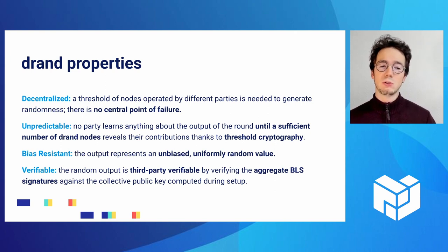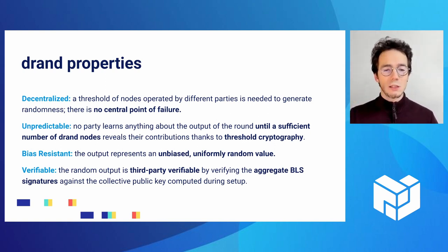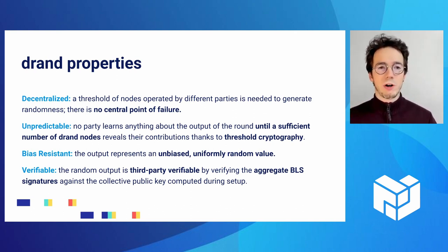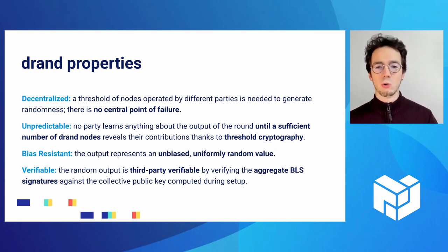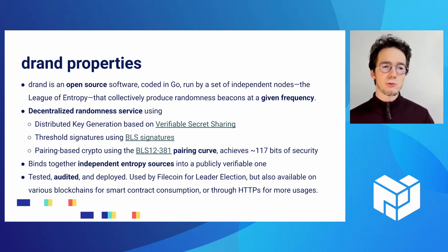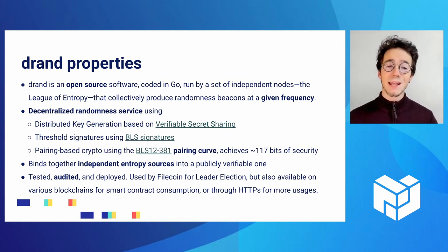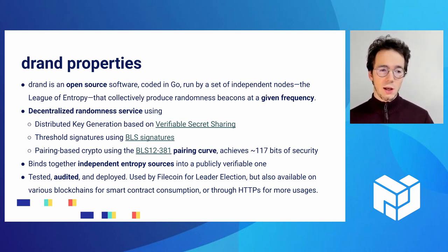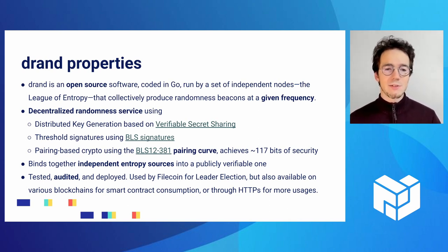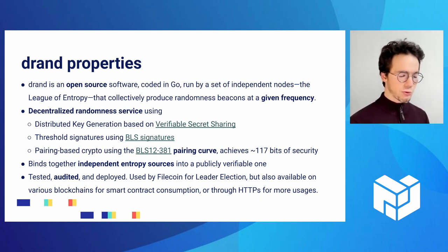It's also very easy to verify drand beacons — you just check a BLS signature against a given public key for the League of Entropy, and if that signature verifies, you can be sure that beacon is valid and has been properly generated by the League of Entropy with a threshold of nodes collaborating to produce it. It's open source, written in Go, and uses fancy cryptography like verifiable secret sharing and distributed key generation. An important thing is that it's based on BLS signatures — specifically Boneh-Lynn-Shacham signatures — instantiated on the BLS12-381 elliptic curve, which is a pairing-friendly curve, and that is quite important for what comes next.